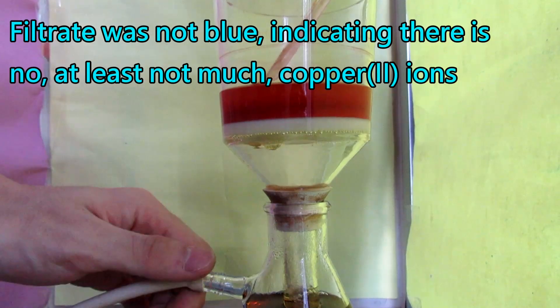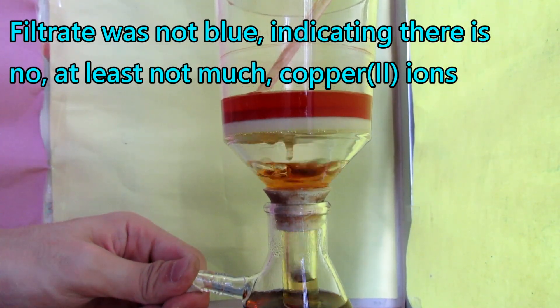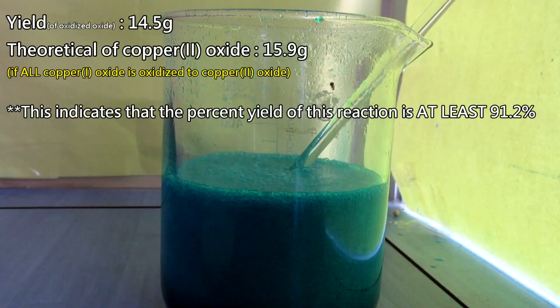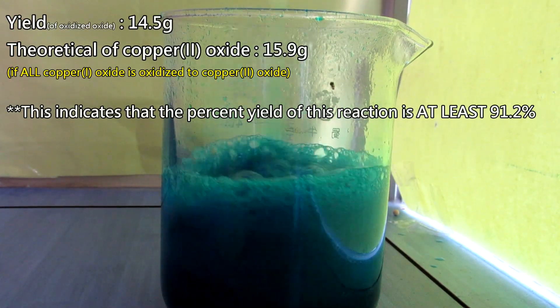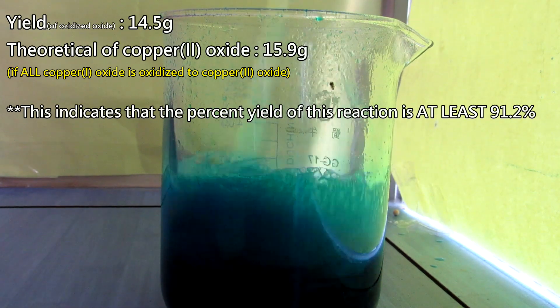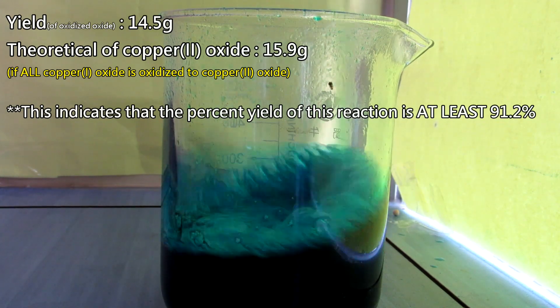However, judging by the color of the filtrate, I believe that all of the copper ions had been reduced. Also, even if all copper-1 oxide has oxidized to copper-2 oxide, the theoretical yield is 15.9 grams. So the yield is at least 90%.